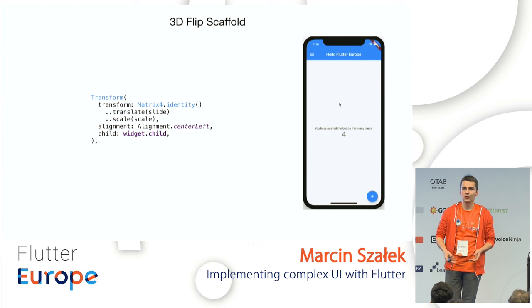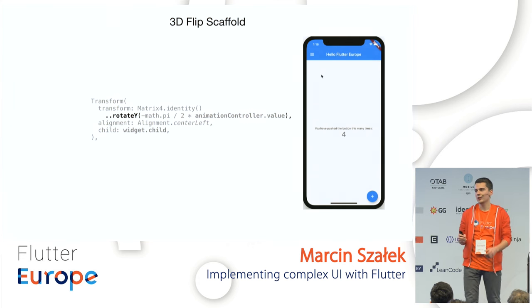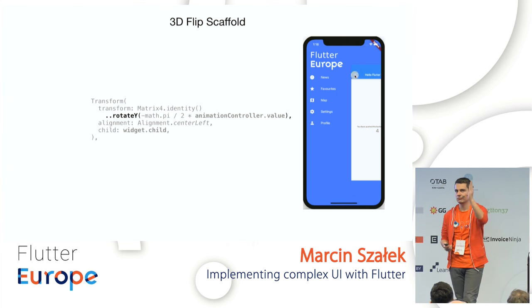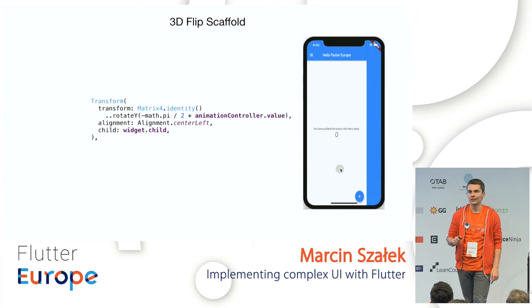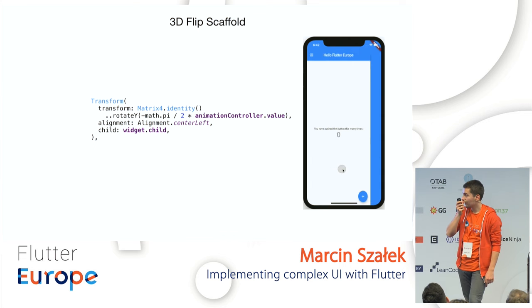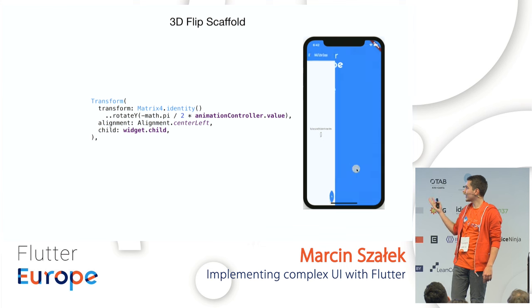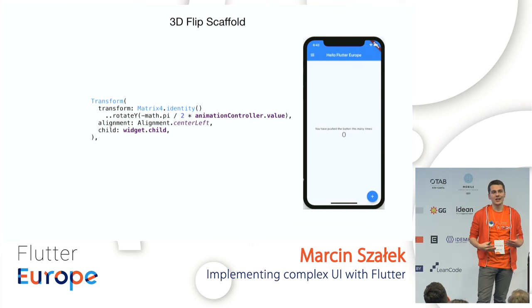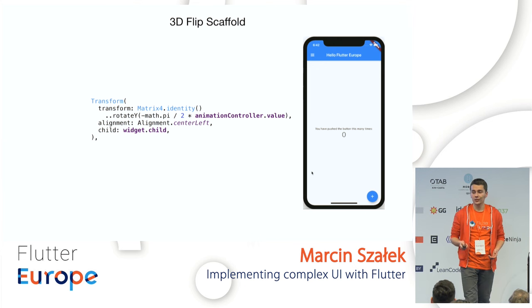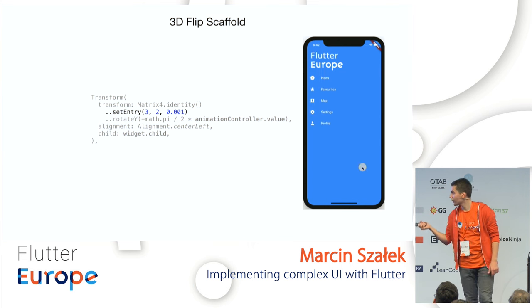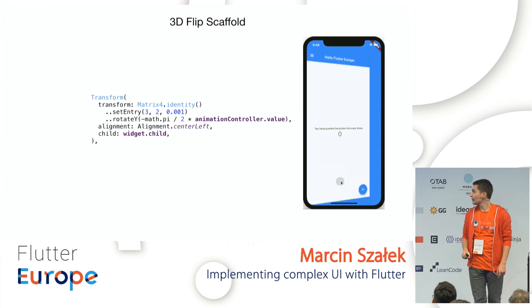In our Transform, we replace the previous methods with rotateY — specifying the angle from the animation controller's value. At first this doesn't look like a proper rotation because matrix identity doesn't take perspective into account — it only works in two dimensions. To add perspective, all we need is one magic line: specifying 0.001 in a specific cell of the matrix (row 3, column 2). By just adding this single line, the whole animation suddenly looks 3D.